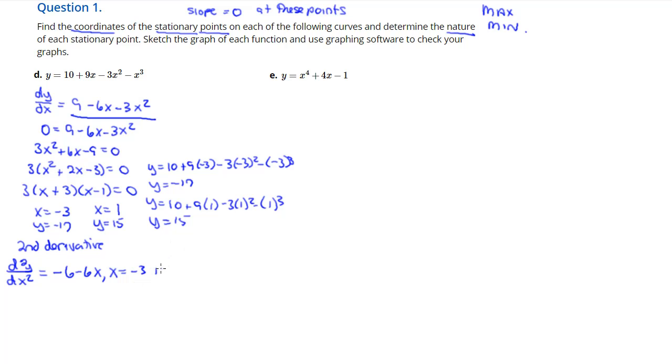And then I'm going to plug in the x of my stationary point, negative 3. And if it's positive it'll be a minimum point, and if it's negative it'll be a maximum point. Well, this one's positive so we know it's a minimum point. I plug in the other point, the other x, and I find out that it's negative, and so I know that that's a maximum point.